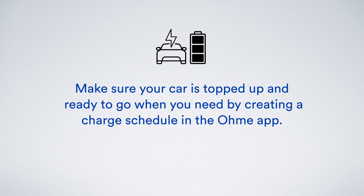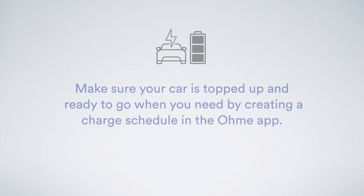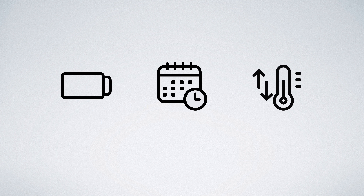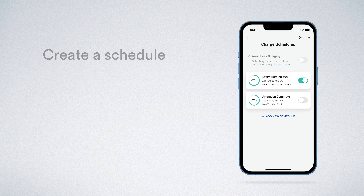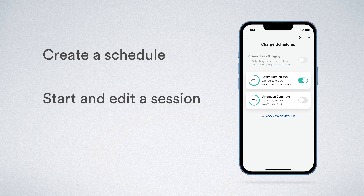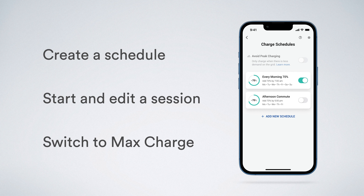Make sure your car is topped up and ready to go when you need by creating a charge schedule in the OMI app. You can decide how much charge you want, what time you want it by, and whether you want to preheat or cool your car before departure. If your plans change, use OMI's max charge setting for an immediate charge. In this video we'll be looking at how to create a schedule, how to start and edit a charge session in progress, and how to switch to a max charge.